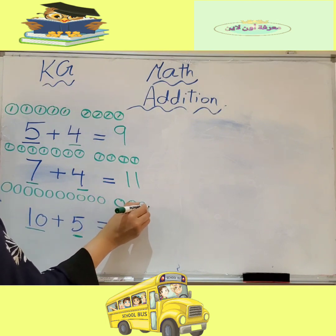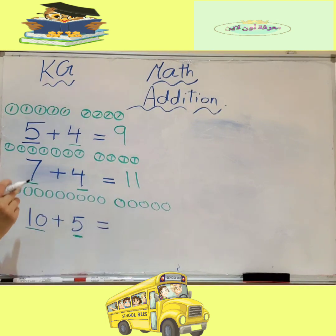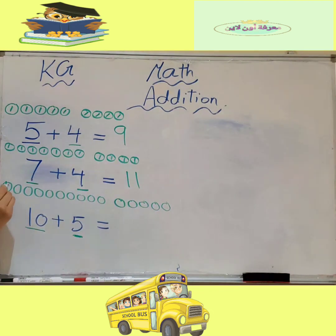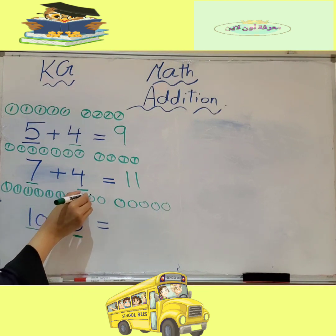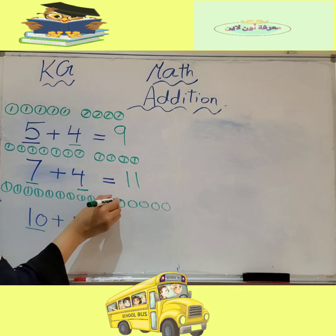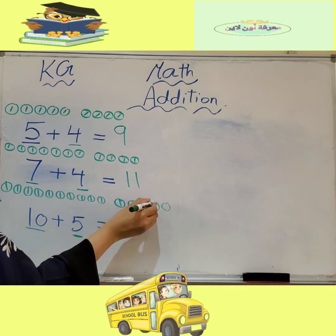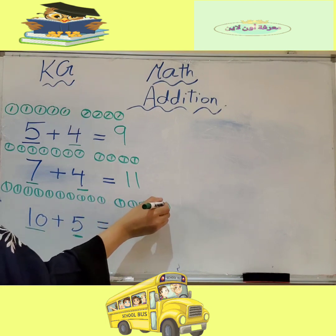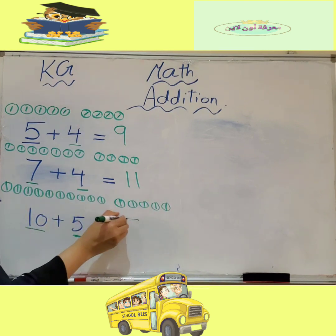One, two, three, four, five. Let's count all together: one, two, three, four, five, six, seven, eight, nine, ten, eleven, twelve, thirteen, fourteen, fifteen. Ten plus five equals fifteen.